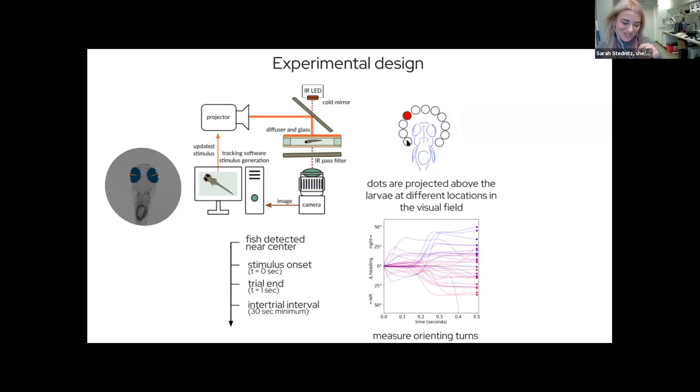For these experiments we're using fictive prey. A zebrafish larva will hunt these little single-celled organisms called paramecia, and we're giving them something that mimics that. We can place these fictive prey at different positions along the midline of the fish. By measuring their orienting turns of their body after stimulus onset, we can get a direct readout of what they're paying attention to in their visual environment.